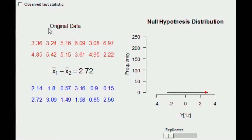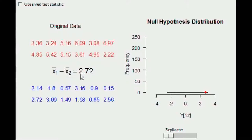Here we have a larger dataset. We drew the student data from it — two groups, each subject to different treatments. We summarize the difference by finding the sample mean for group one and subtracting the sample mean for group two. Doing this gives 2.72 — our observed test statistic, the difference in sample means based on how we actually collected the data.